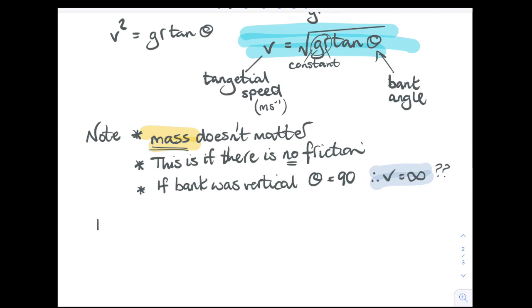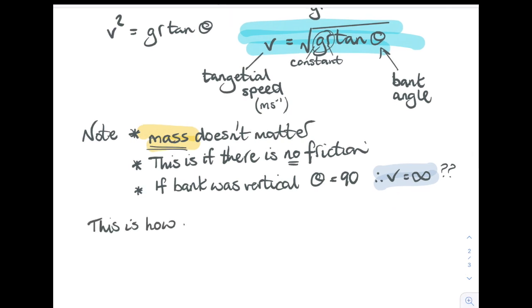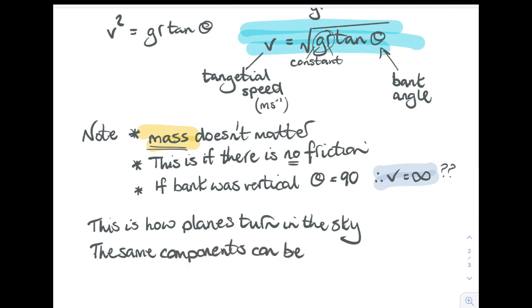There are loads of examples of banking. It's how planes turn in the sky—a vertical component supporting the weight and a horizontal component providing the centripetal force.